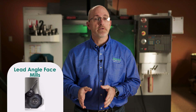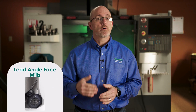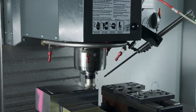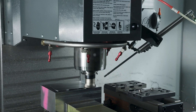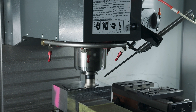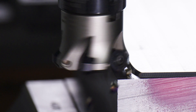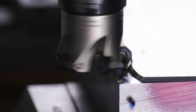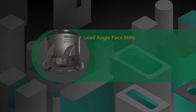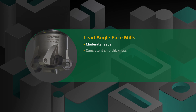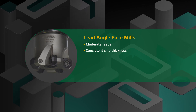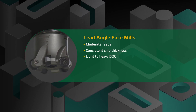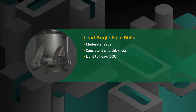Lead angle face mills are generally used for open face milling where a flat workpiece surface requires machining to a desired height or surface finish. These cutters usually operate at a 45 degree cutting angle but are also available in 75 degrees, 60 degrees and more. This type of cutter provides consistent chip thickness and is capable of light to heavy depths of cut and low to moderate feed rates.